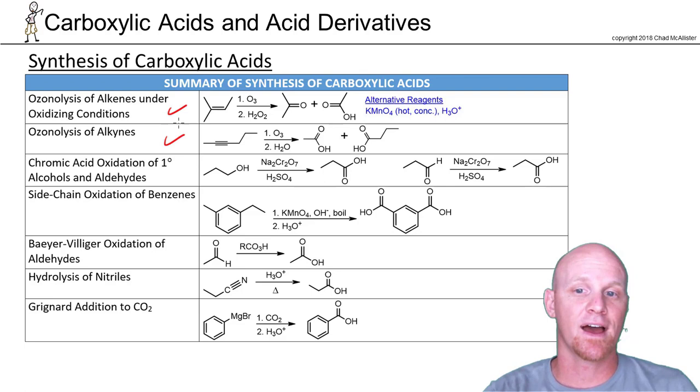First off, you learned ozonolysis—both of alkenes and alkynes—can be used to make carboxylic acids. When you do it with alkenes, you just want to make sure you do it under oxidizing conditions using peroxide in step two.